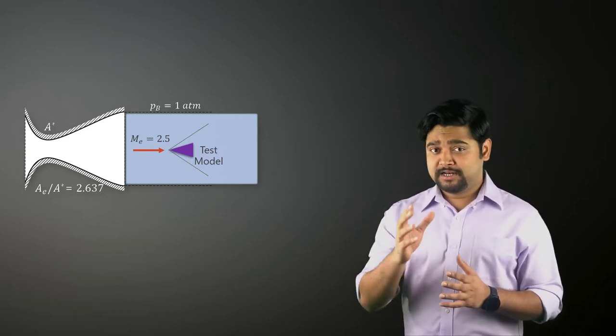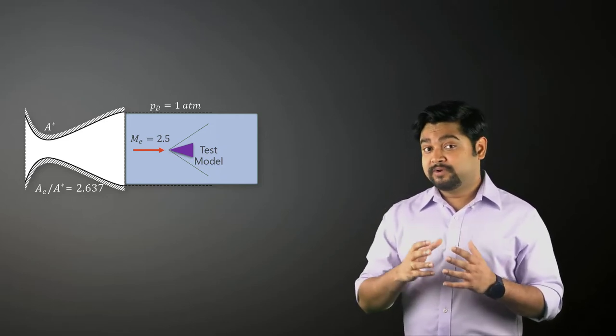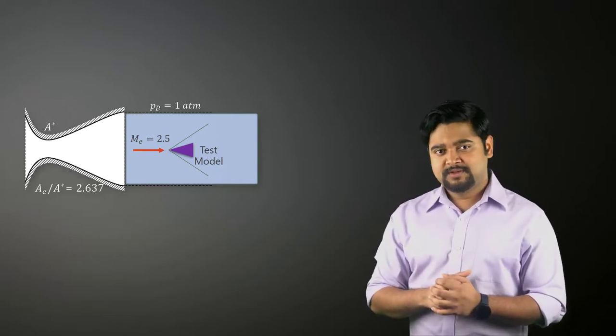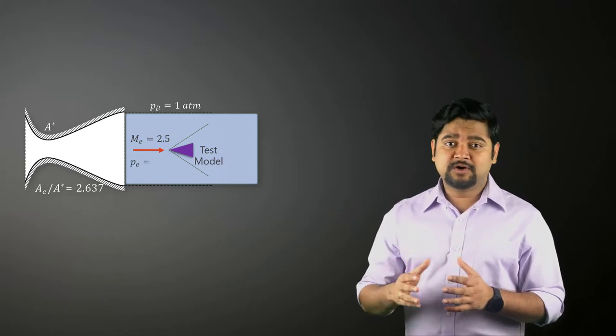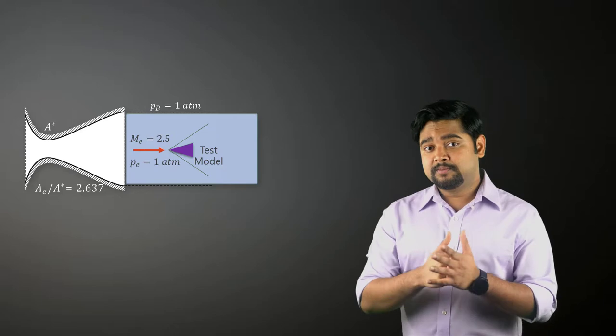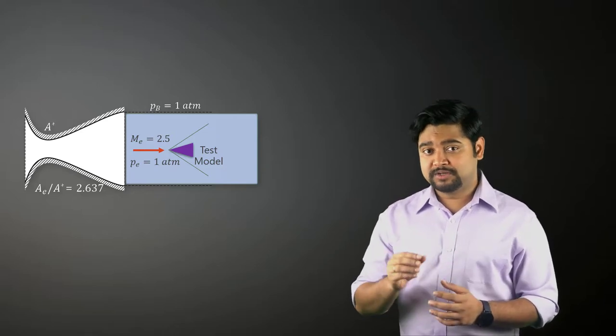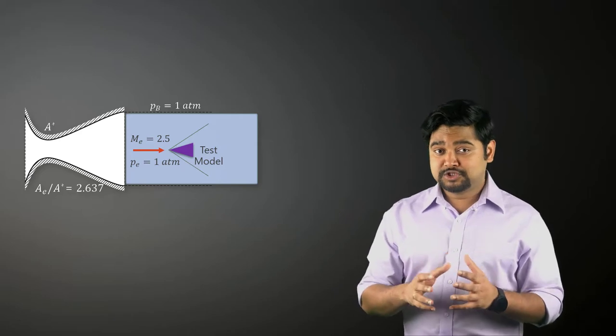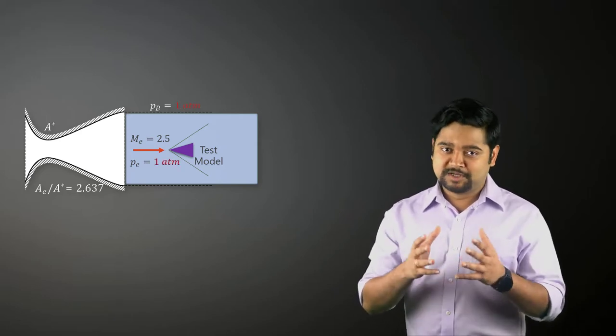If we exhaust the nozzle directly into the lab, then the Mach 2.5 flow passes on the test model as a free jet. For the jet to be free of any shock or expansion waves, the nozzle exit pressure PE must be equal to the back pressure PEB, which in this case would be the ambient pressure in the lab or the atmospheric pressure.